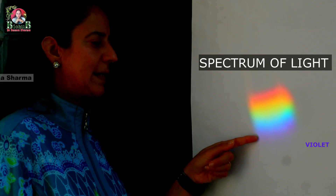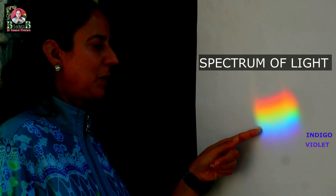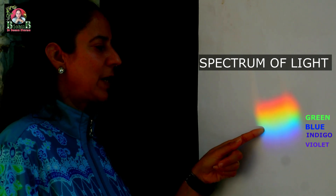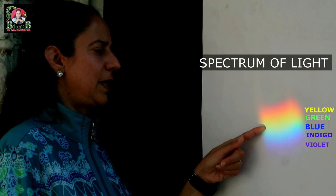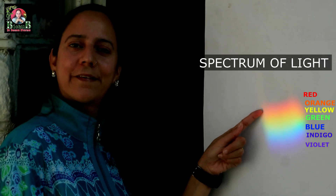Can you see, viewers? Isn't it amazing that the white light of the sun has split into its seven constituent colors? They are beautifully visible in this visible spectrum of light — VIBGYOR: violet, indigo, blue, green, yellow, orange, and red.